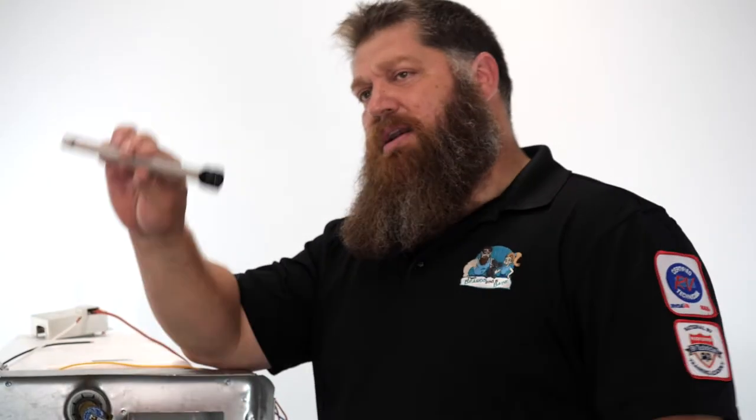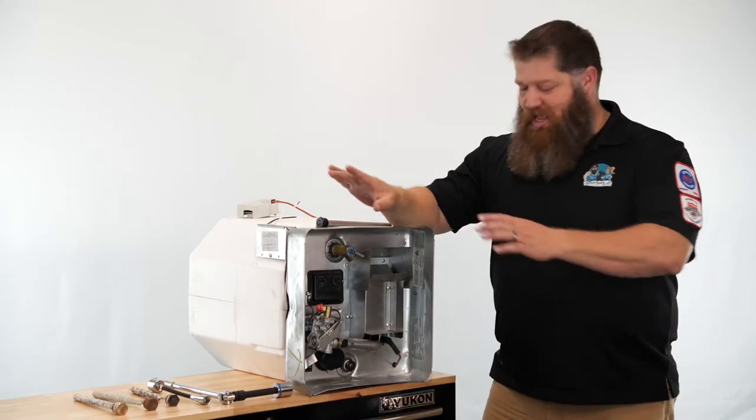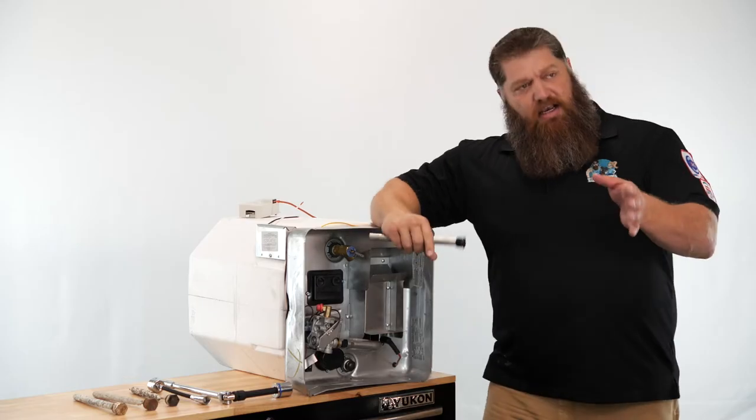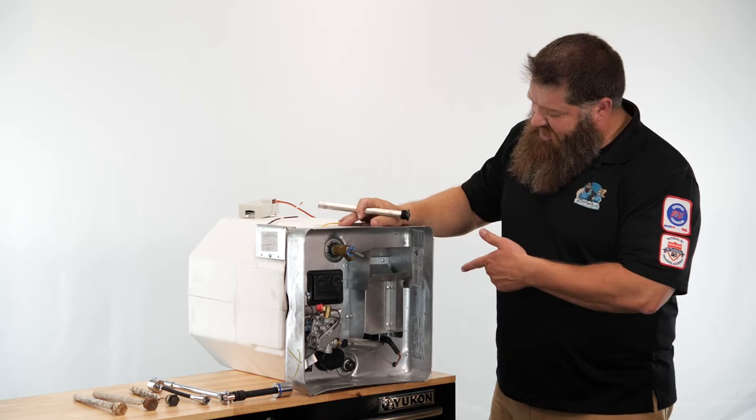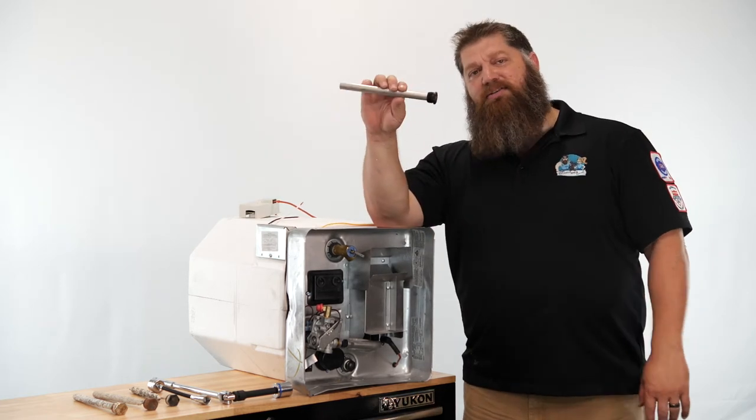Today we're going to be talking to you about anode rods. What is it and how do we change them? In our water heaters we actually have anode rods. If you have a suburban water heater you have an anode rod. Because you have electricity and because we have a steel tank you have electrolysis. The anode rod protects your tank.